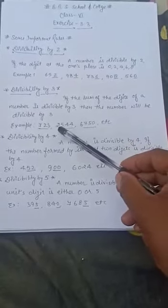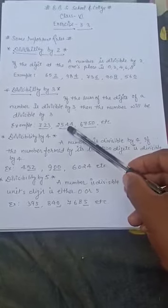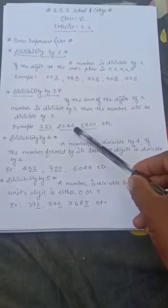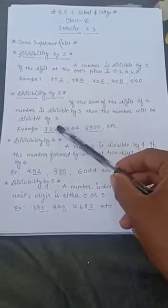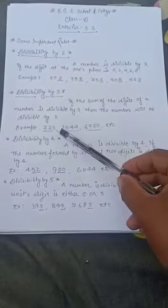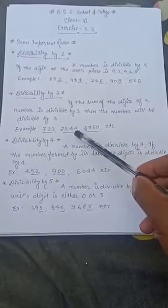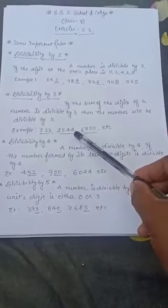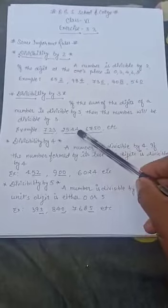For another example: 2 plus 5 equals 7, 7 plus 4 equals 11, 11 plus 4 equals 15. We add all the digits, and if the sum is divisible by 3, then this number is also divisible by 3.